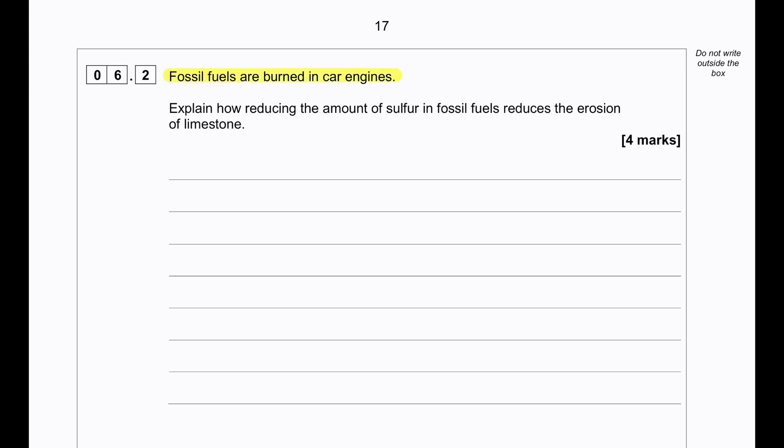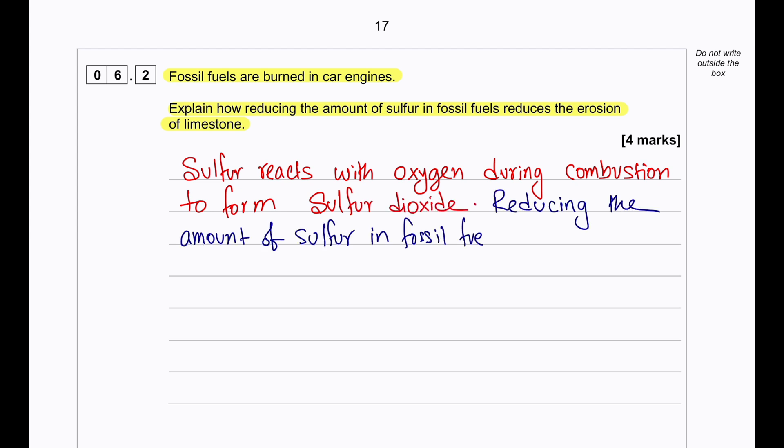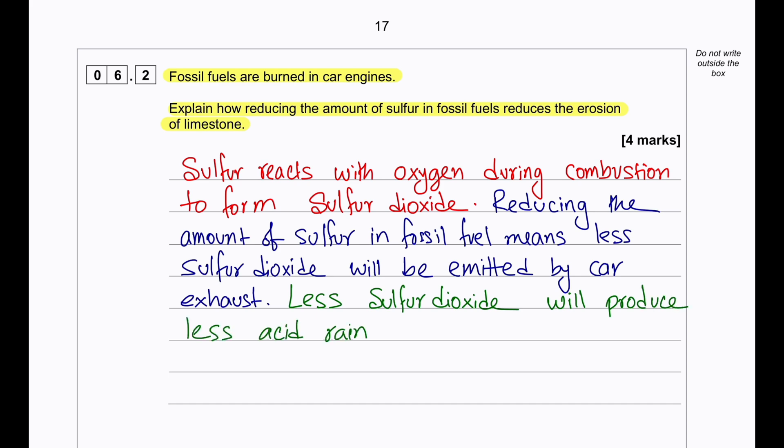Fossil fuels are burned in car engines. Explain how reducing the amount of sulfur in fossil fuels reduces the erosion of limestone. Sulfur in the fossil fuel reacts with oxygen during the combustion process to form sulfur dioxide. So if sulfur is removed from fossil fuel, then less sulfur dioxide is emitted by the car's exhaust and as a result less acid rain is produced. So less limestone will react with the acid rain.